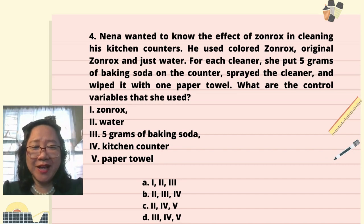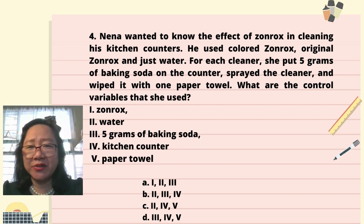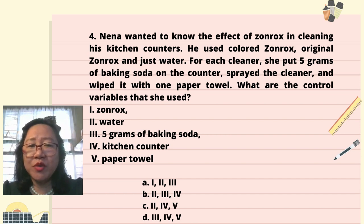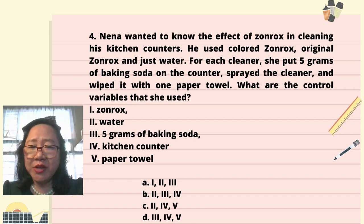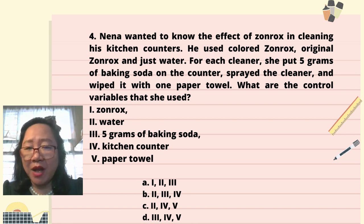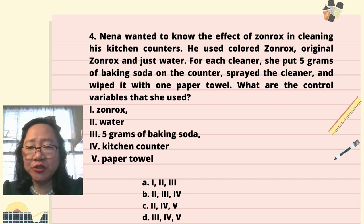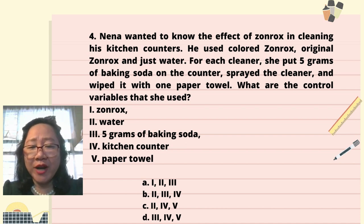Question 4: Nena wanted to know the effect of sunrocks in cleaning her kitchen counters. She used colored sunrocks, original sunrocks, and just water. For each cleaner, she put 5 grams of baking soda on the counter, sprayed the cleaner, and wiped it with one paper towel. What are the control variables? 1. Sunrocks. 2. Water. 3. 5 grams of baking soda. 4. Kitchen counter. 5. Paper towel. Choices: A. 1, 2, and 3. B. 2, 3, and 4. C. 2, 4, and 5. D. 3, 4, and 5.